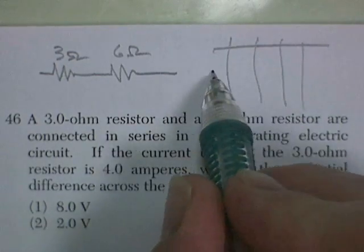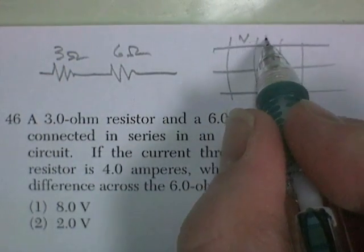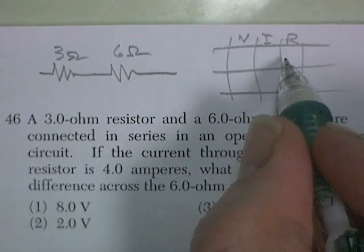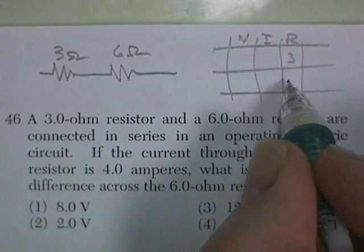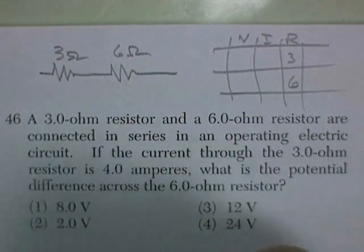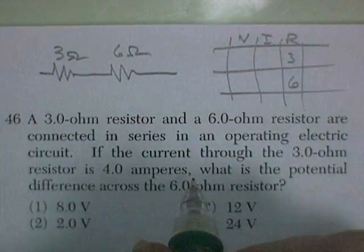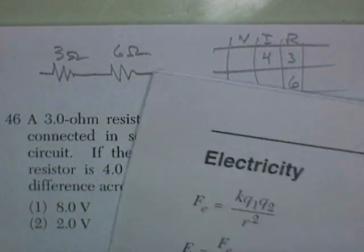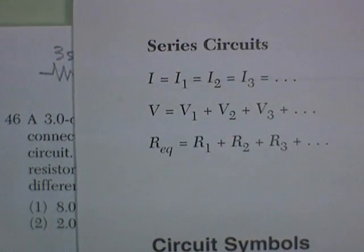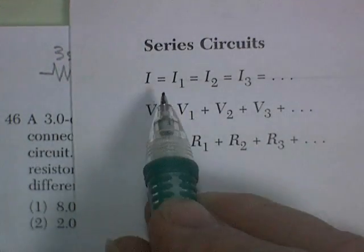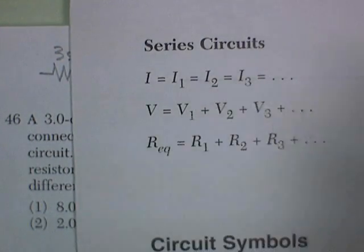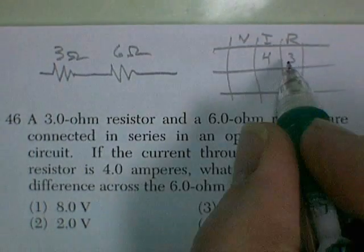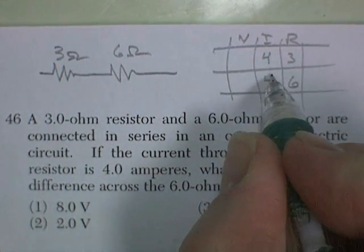This really isn't necessary for a lot of things, but I like it. Voltage, current, resistance. And, let's see, I've got a 3 ohm resistor and a 6 ohm resistor. And I've got 4 amps through the 3 ohm. And now, in a series circuit, I know that my current is the same everywhere in that circuit. So if I know that I've got 4 amps through this resistor, I'm going to have 4 amps through that as well.